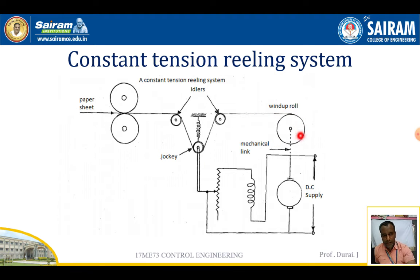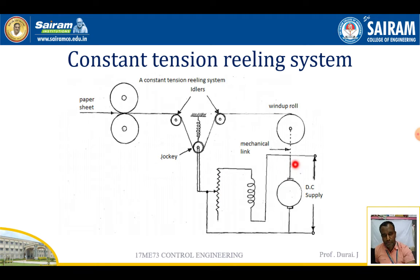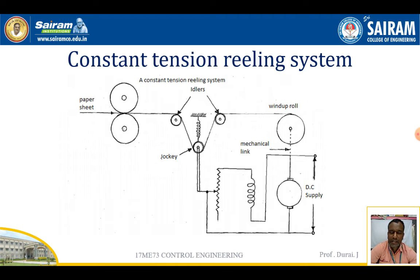They maintain constant tension over the paper sheets and produce good paper rolls. As the paper sheet comes through, the jockey movement — moving up or down — changes the field current, which is used to run the motor and increase or reduce speed to maintain constant tension. This is how the constant tension reeling system works.